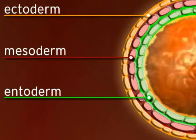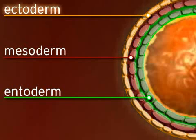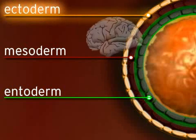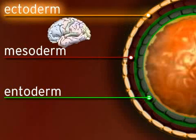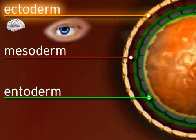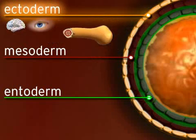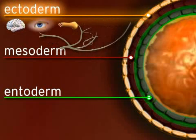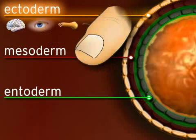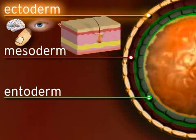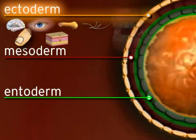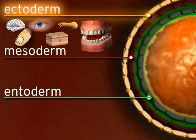For those among you who are interested in this topic, the ectoderm eventually turns into the brain, the eyes, the spinal cord, the peripheral nervous system, the nails, the skin, the hair, and the teeth too.